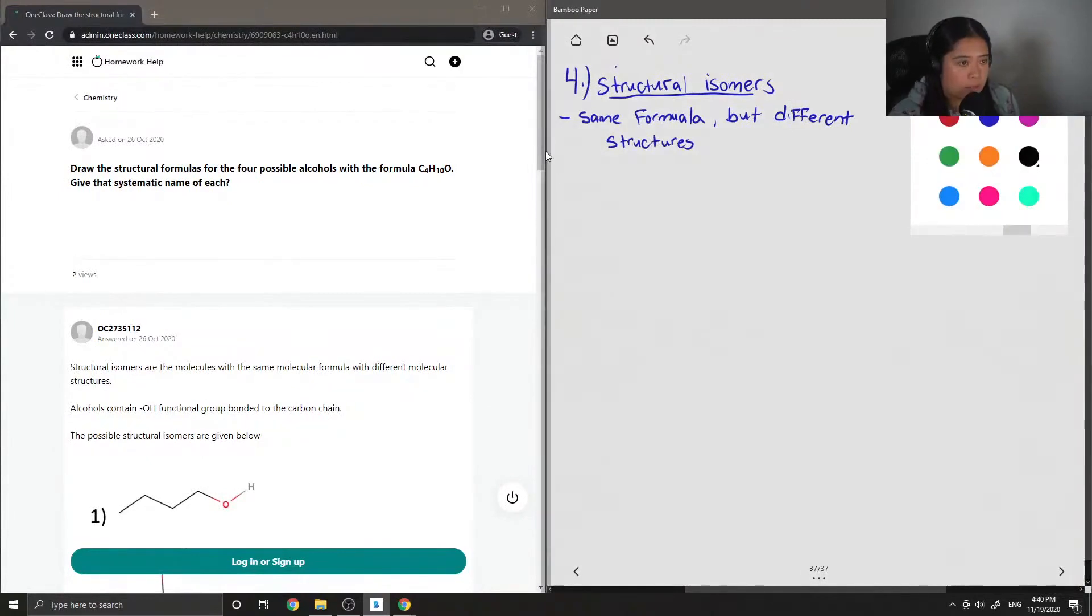I'm going to write out the example they are asking: C4H10O. The question asks for the four possible alcohols, so that tells us there are four structural isomers in total, and each one will have an alcohol group.